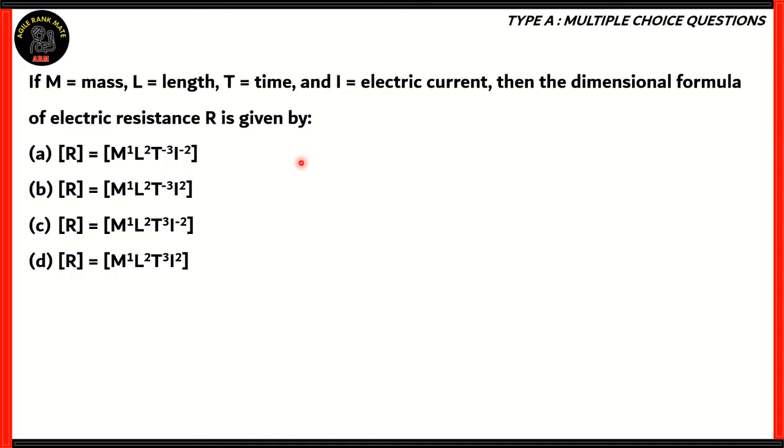Well, for that, we would need to find a formula involving the electric resistance R. Now, there are many formulas. You can use Ohm's Law, which is V equals I R. You can also use other formulas, such as Joule's Law of Heating, where H equals I squared Rt. Now, H here represents heat, which is basically a form of energy.